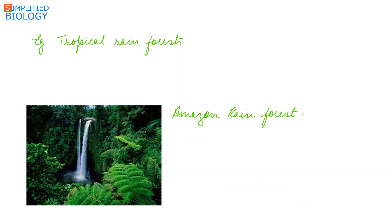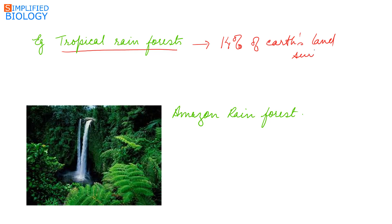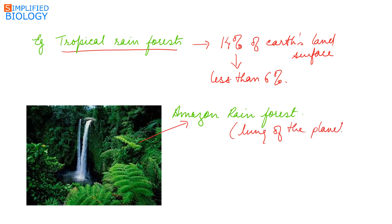The tropical rainforest that once occupied 14% of Earth's land surface has been reduced to less than 6% due to human activities causing habitat loss. The Amazon rainforest, referred to as the 'lung of the planet,' is being cut and cleared for soya bean cultivation.